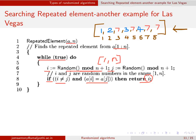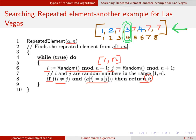Working through the example: suppose the algorithm picks indices 2 and 3 — the contents are 2 and 7 respectively, so they differ and nothing is returned. Next suppose indices 4 and 4 are chosen — since i equals j, the condition i ≠ j is not satisfied and nothing is returned. Then suppose indices 5 and 7 are chosen — the content at both 5 and 7 is 7, so the algorithm returns the value 5.